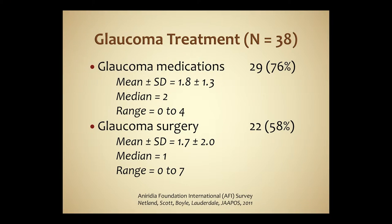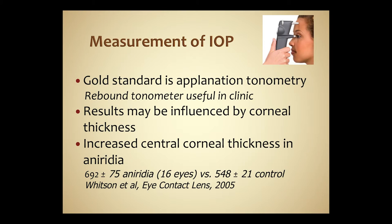Most patients who develop glaucoma are treated with medications, and very frequently with surgery — in fact, the majority require surgical treatment at some point. The gold standard for measuring intraocular pressure in the United States is tonometry, but we've found the rebound tonometer very useful in clinic. Shown in the upper right, the rebound tonometer allows us to measure IOP in children very easily, reducing the need for examinations under anesthesia. However, results can be influenced by corneal thickness, and increased central corneal thickness is common in aniridia, which can be a factor in interpreting results.